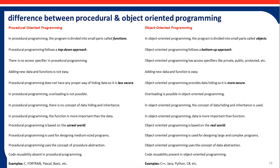The main differences between procedural and object-oriented programming: C is the procedural programming language, while C++ is the object-oriented programming language. Procedural programming follows a top-down approach, while object-oriented programming follows a bottom-up approach. OOP has access modifiers like private, public, and protected, but procedural programming does not. Adding new data and functions is not easy in procedural programming, but it is easy in OOP. Procedural programming is less secure, while object-oriented programming is more secure.